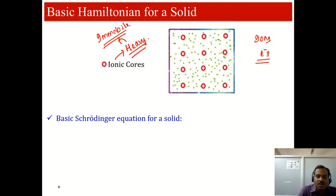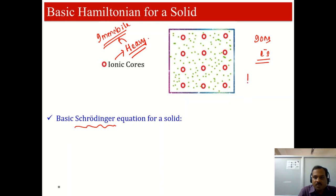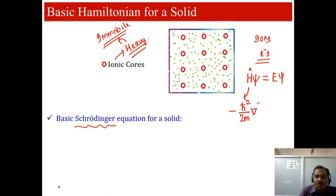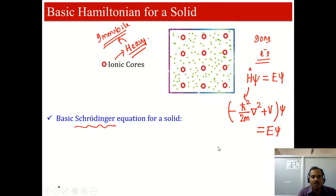In quantum mechanics, the basic tool used to study the properties of a solid is the Schrödinger equation. The basic formalism is H-cap psi equals E psi, where H is the Hamiltonian operator. It has two components: the kinetic energy component, that is minus h-cross squared by 2m times del-squared, plus the potential energy component V, times psi equals E psi. This is the basic tool described in quantum mechanics.